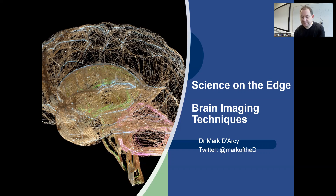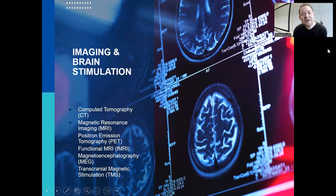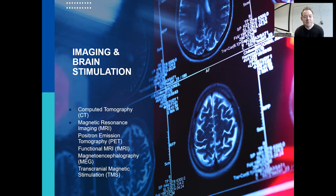Brain imaging techniques — imaging and brain stimulation. We're going to talk about computed tomography (CT scans), magnetic resonance imaging (MRI), positron emission tomography (PET), functional MRI (fMRI), magnetoencephalography (MEG), and transcranial magnetic stimulation (TMS).